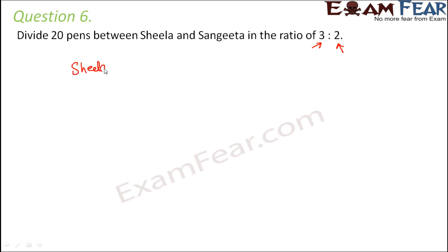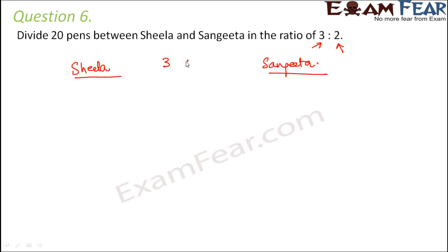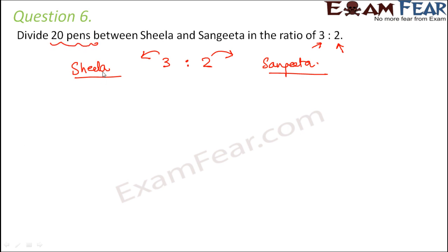So let's say this is Sheila and this is Sangeeta. The ratio given is 3 is to 2, where 3 stands for Sheila and 2 stands for Sangeeta, because it says Sheila and Sangeeta and in the same order it is written 3 is to 2. So 3 is for Sheila and 2 is for Sangeeta. Now the total number of pens is 20 — so how many pens should Sheila get?